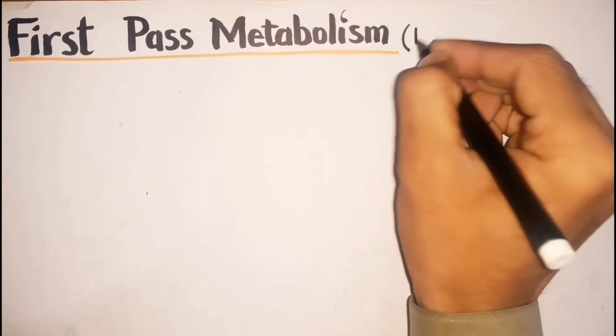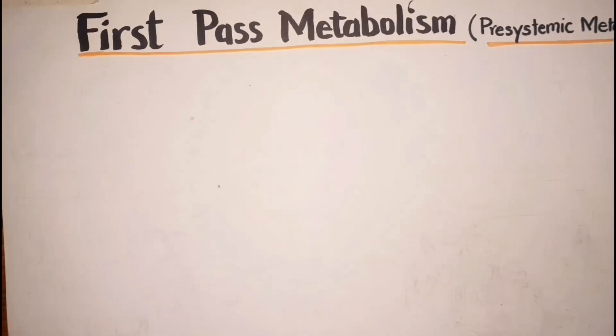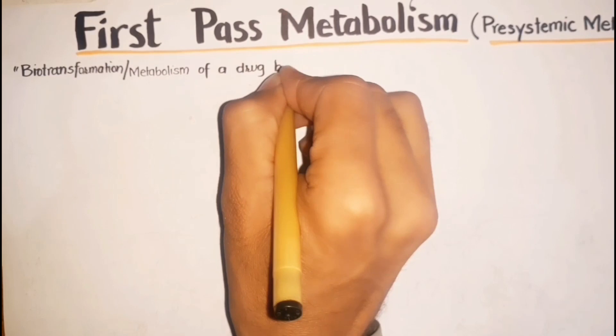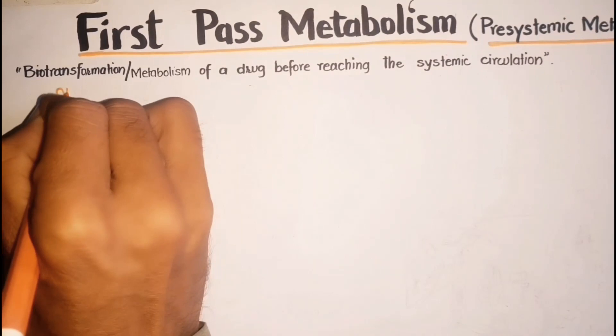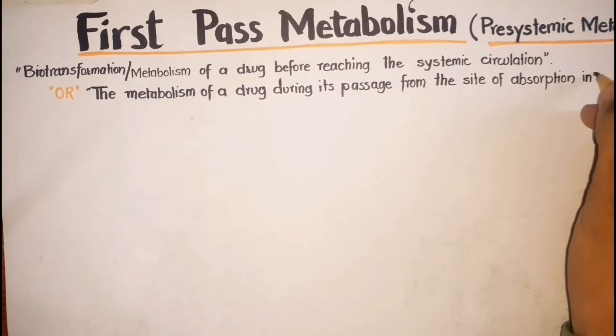Well, the first pass metabolism is also known as presystemic metabolism. First pass metabolism is actually the biotransformation or metabolism of a drug before reaching the systemic circulation, or it is the metabolism of a drug during its passage from the site of absorption into the systemic circulation or simply the site of action.